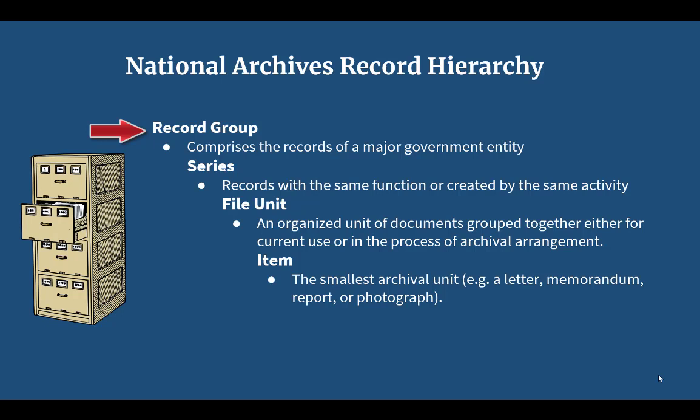It might be helpful to think of a record group as an entire file cabinet. It has many different drawers and folders and items within those drawers, but the records are united by the federal agency that created or maintained those records. This is the largest bucket and a very high-level grouping of records. Records within one record group are not always found in the same location — the National Archives has various regional archives and presidential libraries across the country, and records within a record group may be held at one or more of those locations.